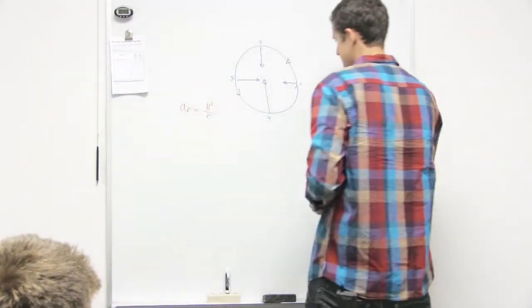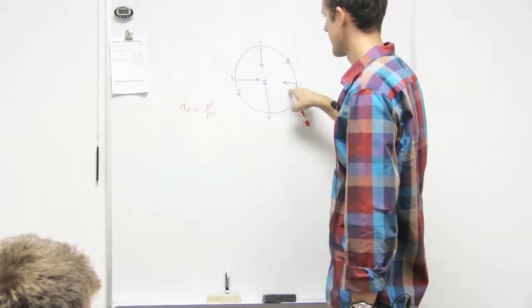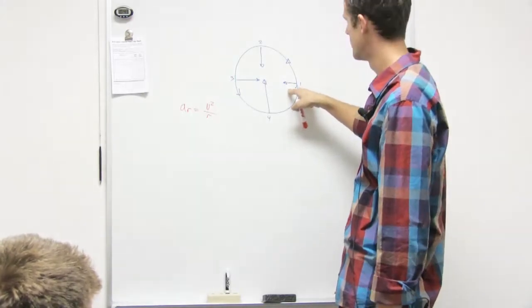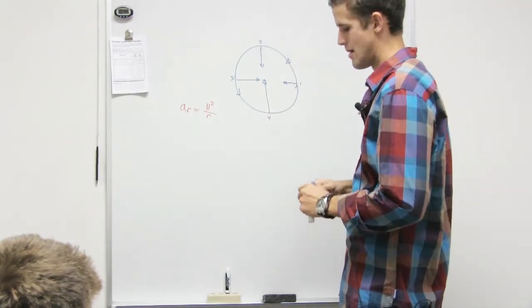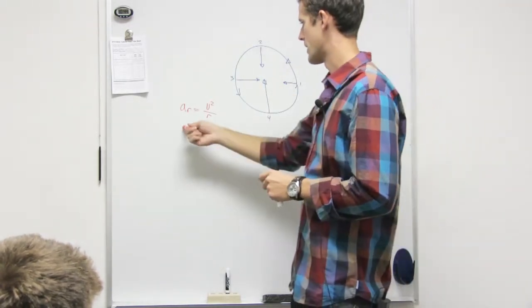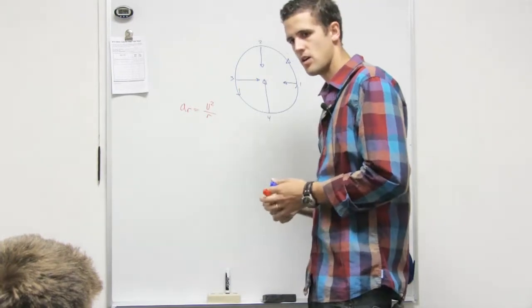So in this case, you've got a radial acceleration that starts out kind of small, then it grows every time. So what in this equation changed to make it grow?